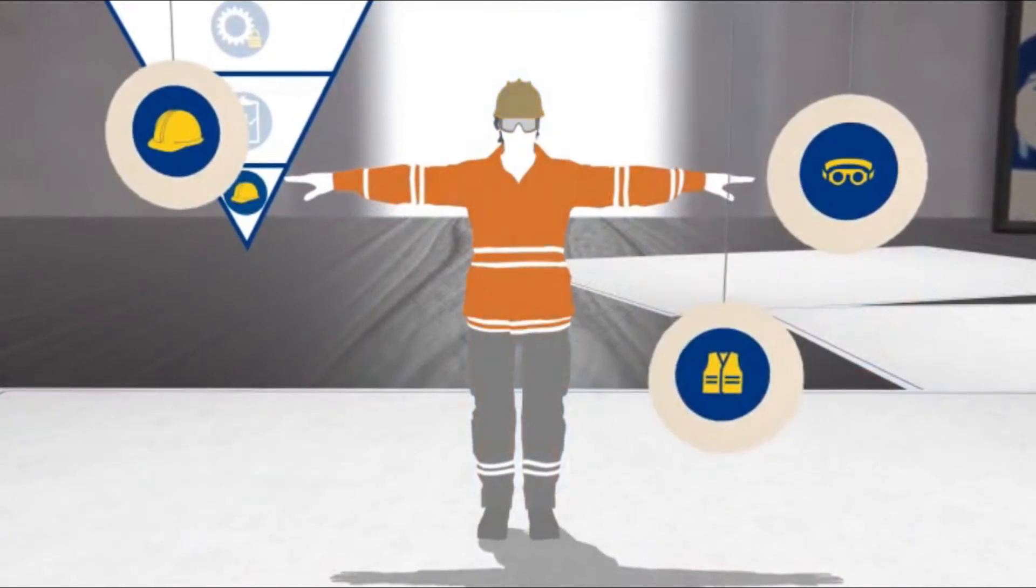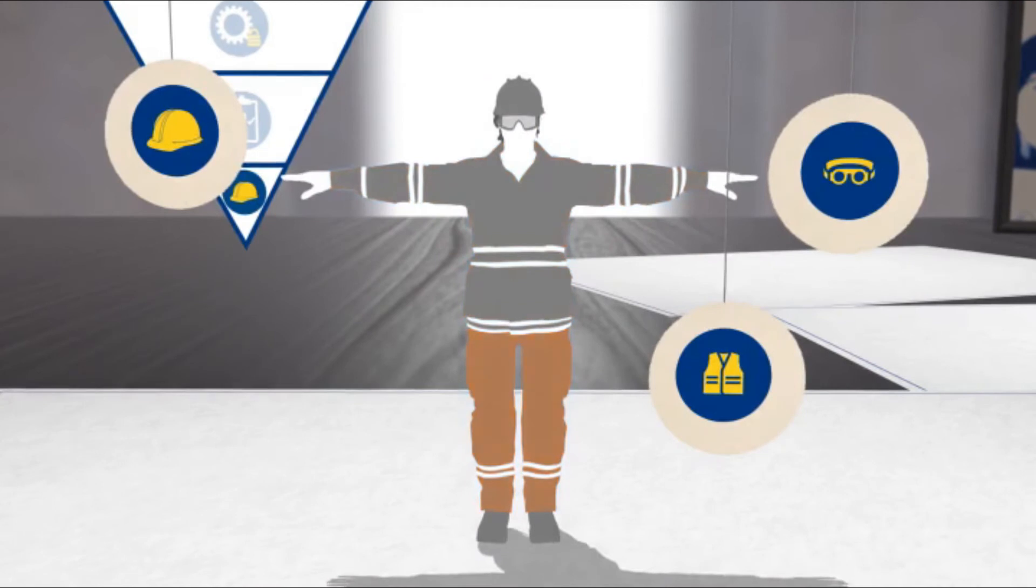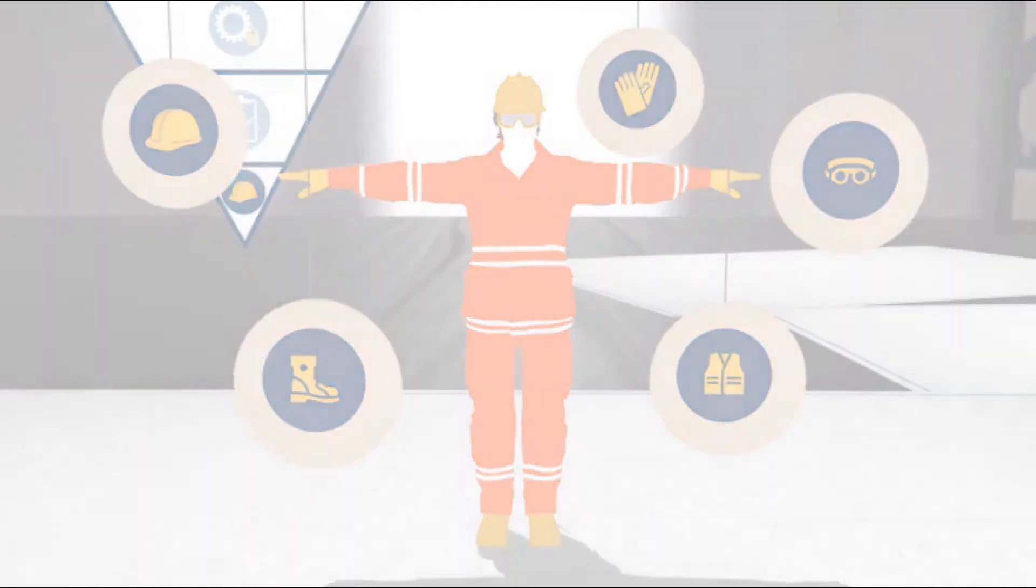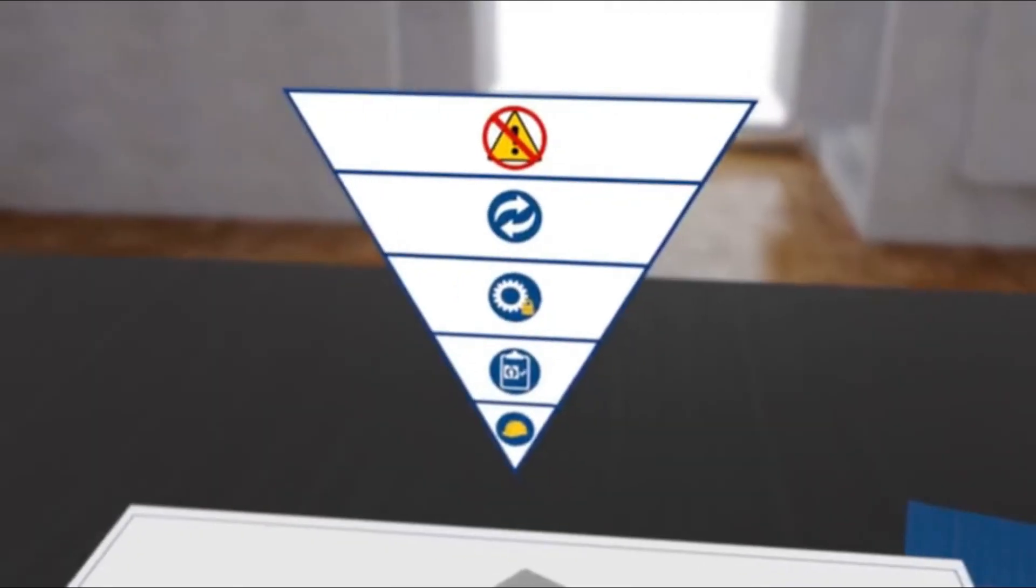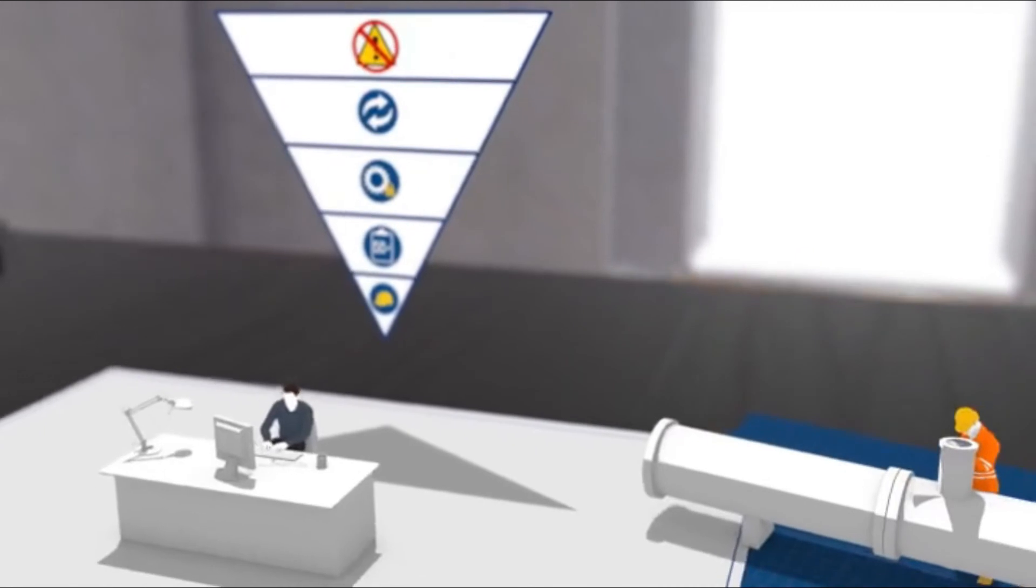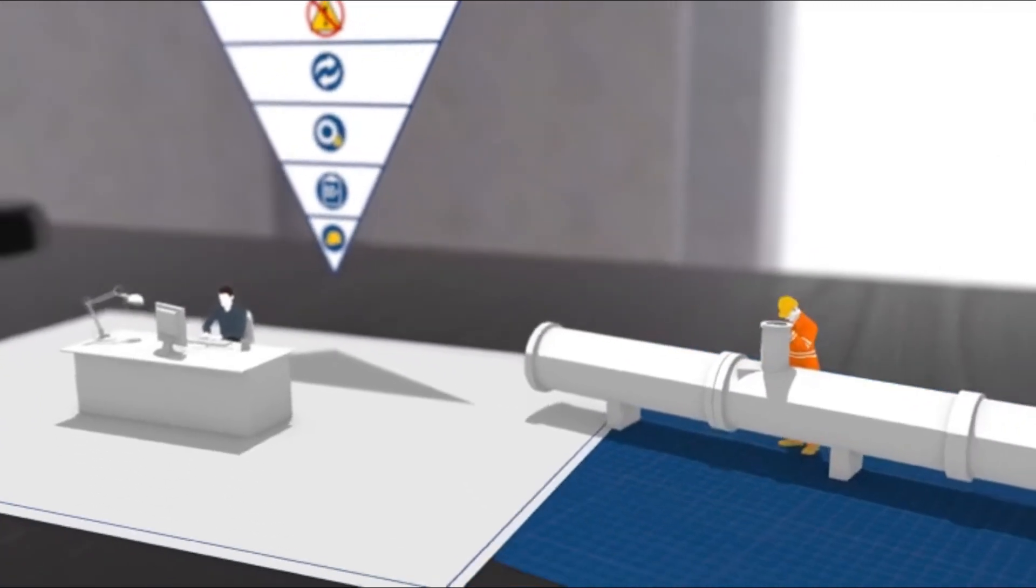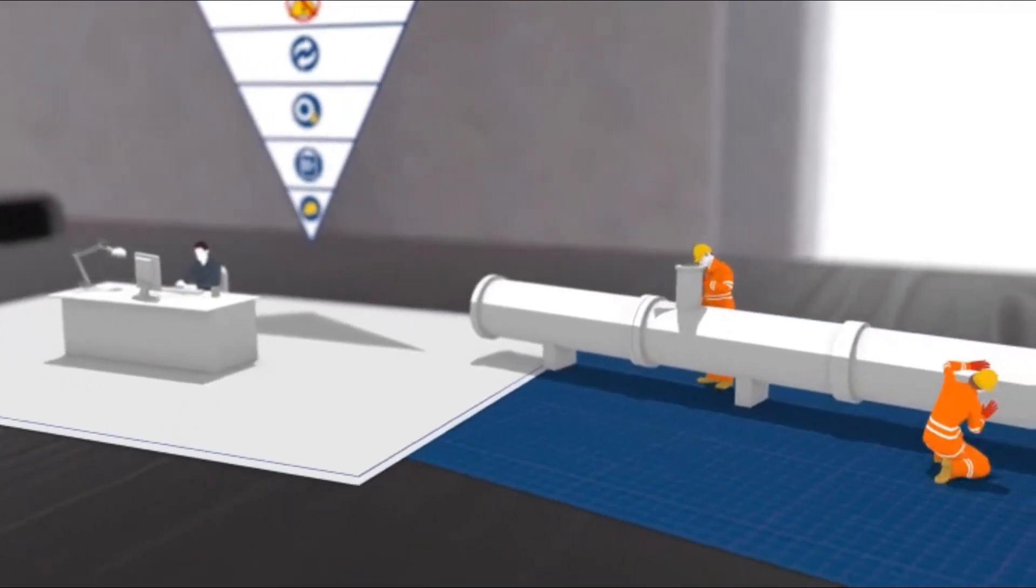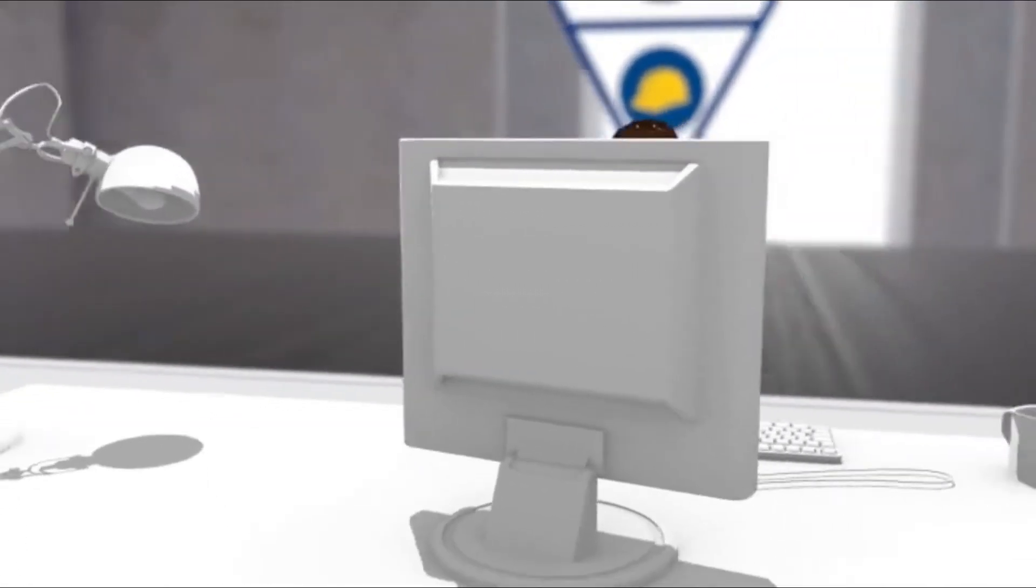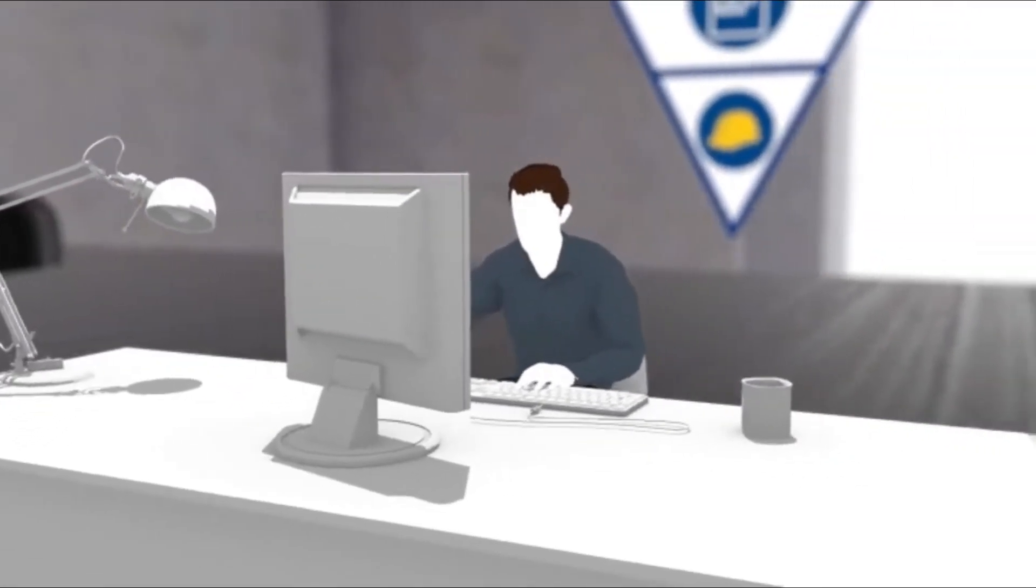The hierarchy of control prompts you to ask questions at every stage of your work, whether you're in an office or out in the field. And it should be applied right at the start of the design and planning stages of a job.